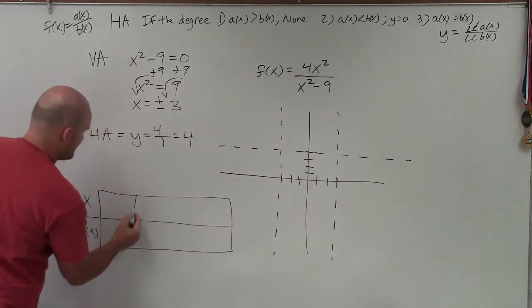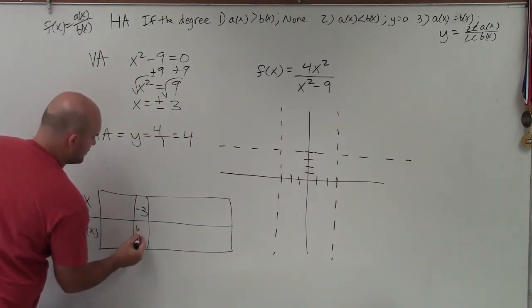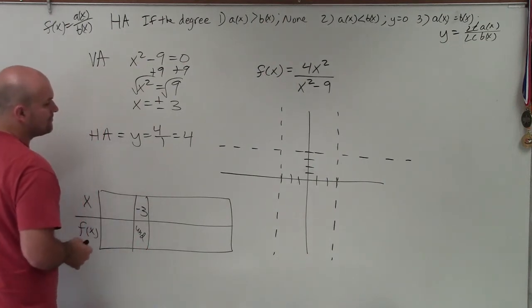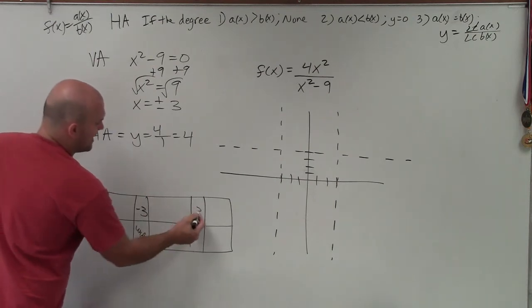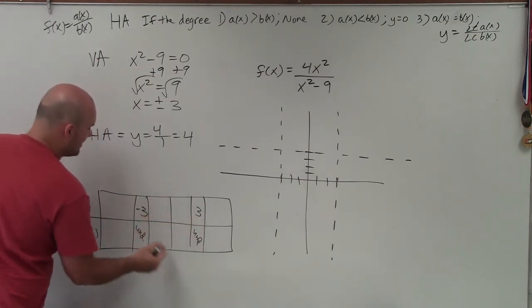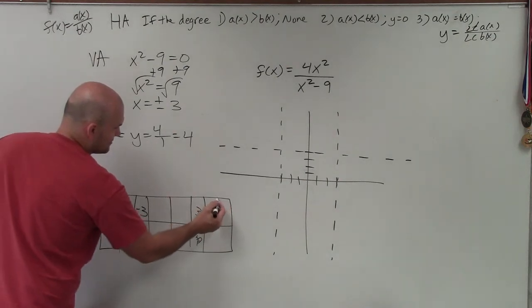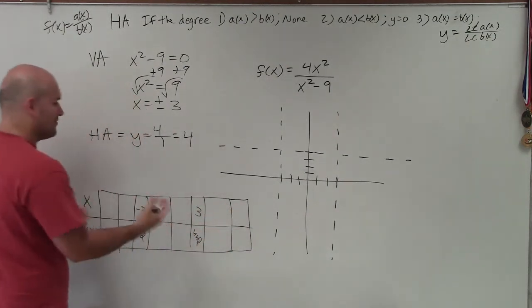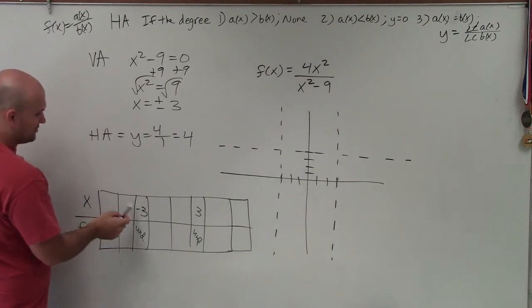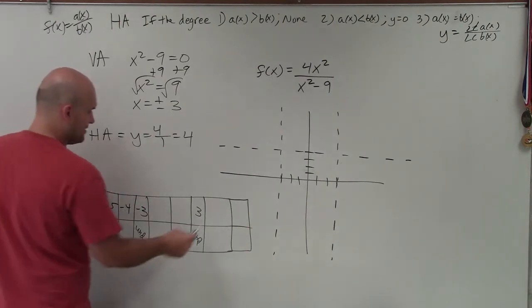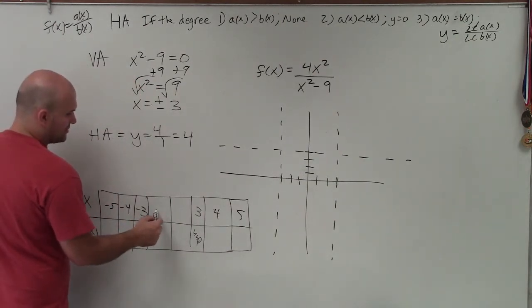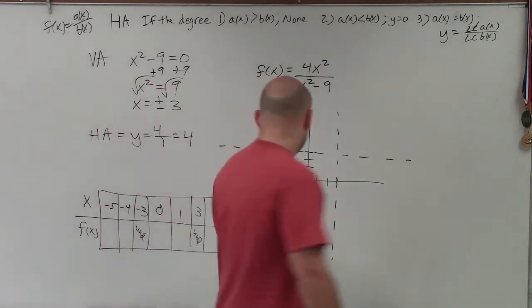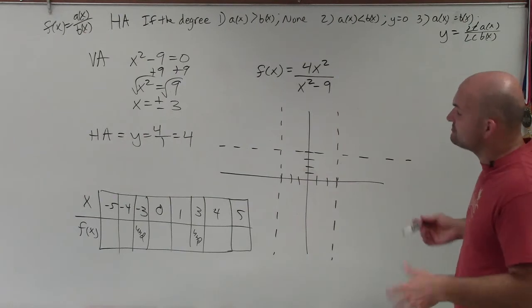is I simply want to pick two points to the left and to the right of each asymptote. So I have here negative 3, and we know negative 3 is an asymptote, so it's undefined. Then we also have positive 3, which is undefined. So I don't want to do anything crazy. I'm just going to pick the points that are right next to it. So to the left, I'll just do negative 4, negative 5. Here, I'll do positive 4, positive 5. And then here, I'll do, how about we do 0 and 1? Make it very simple. So now, let's just plug in each one of those values.